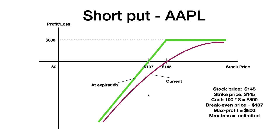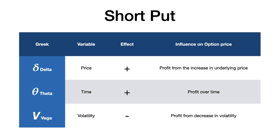Next we look at the Greeks and their influence on the option price. Delta measures the sensitivity to the stock's price and has a positive effect, meaning it profits from an increase in the underlying price. So if Apple's stock price increases, delta increases and that will influence the option price to increase as well.